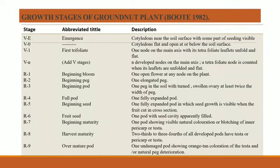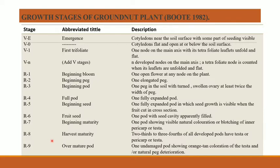The stages of the groundnut described by Boote 1982: the first stage is VE, which is the emergence stage, where cotyledons are near the soil surface with part of the seedling visible. V0 is cotyledons flat and open below the soil surface. V1 is the first trifoliate stage. Vn represents developed nodes on the main axis, and a trifoliate node is counted when its leaflets are unfolded and flat.